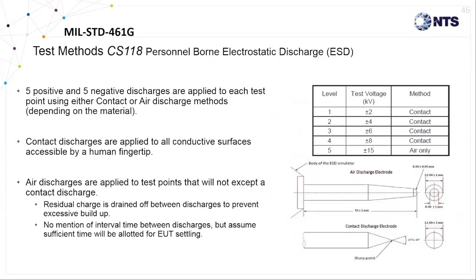ESD is applied using either a contact discharge or air discharge test method. The contact discharge is the preferred method due to better control of the applied current and less influence caused by environmental conditions. The contact discharges are applied using a tapered tungsten tip precisely to inject that pulse onto a conductive surface.